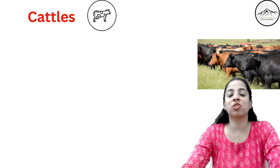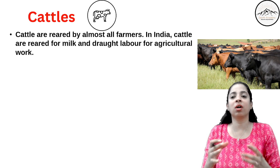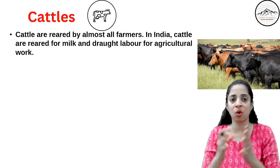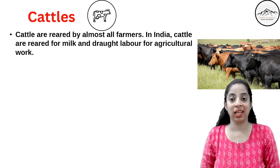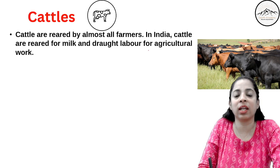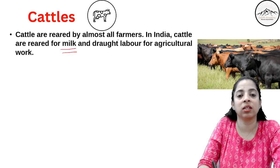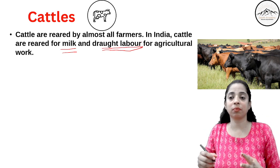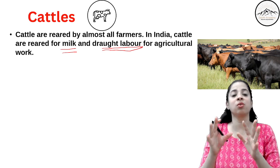Now let's talk about the first category: cattles. Cows, buffaloes, and oxen — all these are cattles. Cattles are reared by almost all farmers in India for milk and drought labour for agricultural work. Drought labour means the labour of cattles used in agriculture.